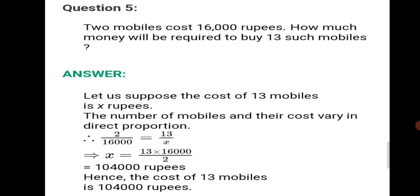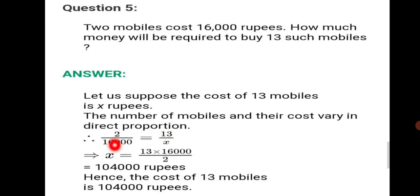Question 5: 2 mobiles cost 16,000 rupees. How much money will be required to buy 13 such mobiles? Let us suppose the cost of 13 mobiles is X rupees. The number of mobiles and the cost are in direct proportion — 2 mobiles cost 16,000, so 13 will require more rupees; both are increasing. The equation form: 2 upon 16,000 is equal to 13 upon X. Cross multiplying: X is equal to 13 into 16,000 upon 2, which gives 1,04,000 rupees. Hence, the cost of 13 mobiles is 1,04,000 rupees.